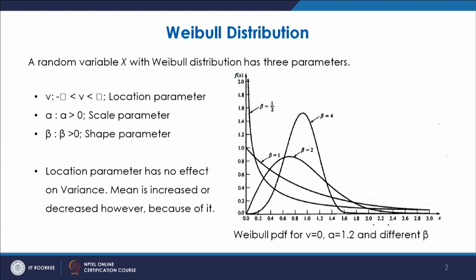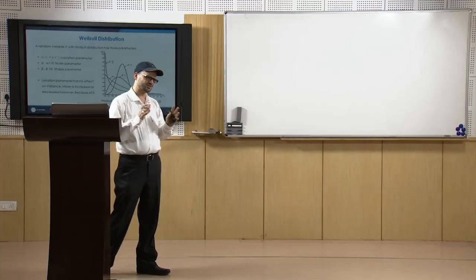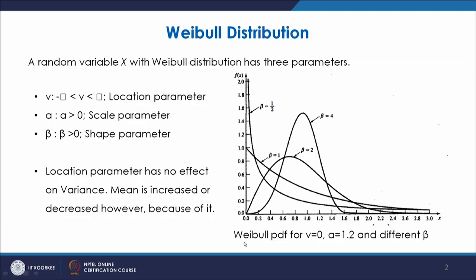The Weibull distribution function curves are shown here with three parameters: nu, alpha, and beta. Nu varies from minus infinity to plus infinity — it is the location parameter and tells about the place at which the function will start. If nu is 0, the function starts at 0. Alpha is the scale parameter and beta is the shape parameter. Depending on different values of alpha and beta, you get different shapes of the Weibull distribution.